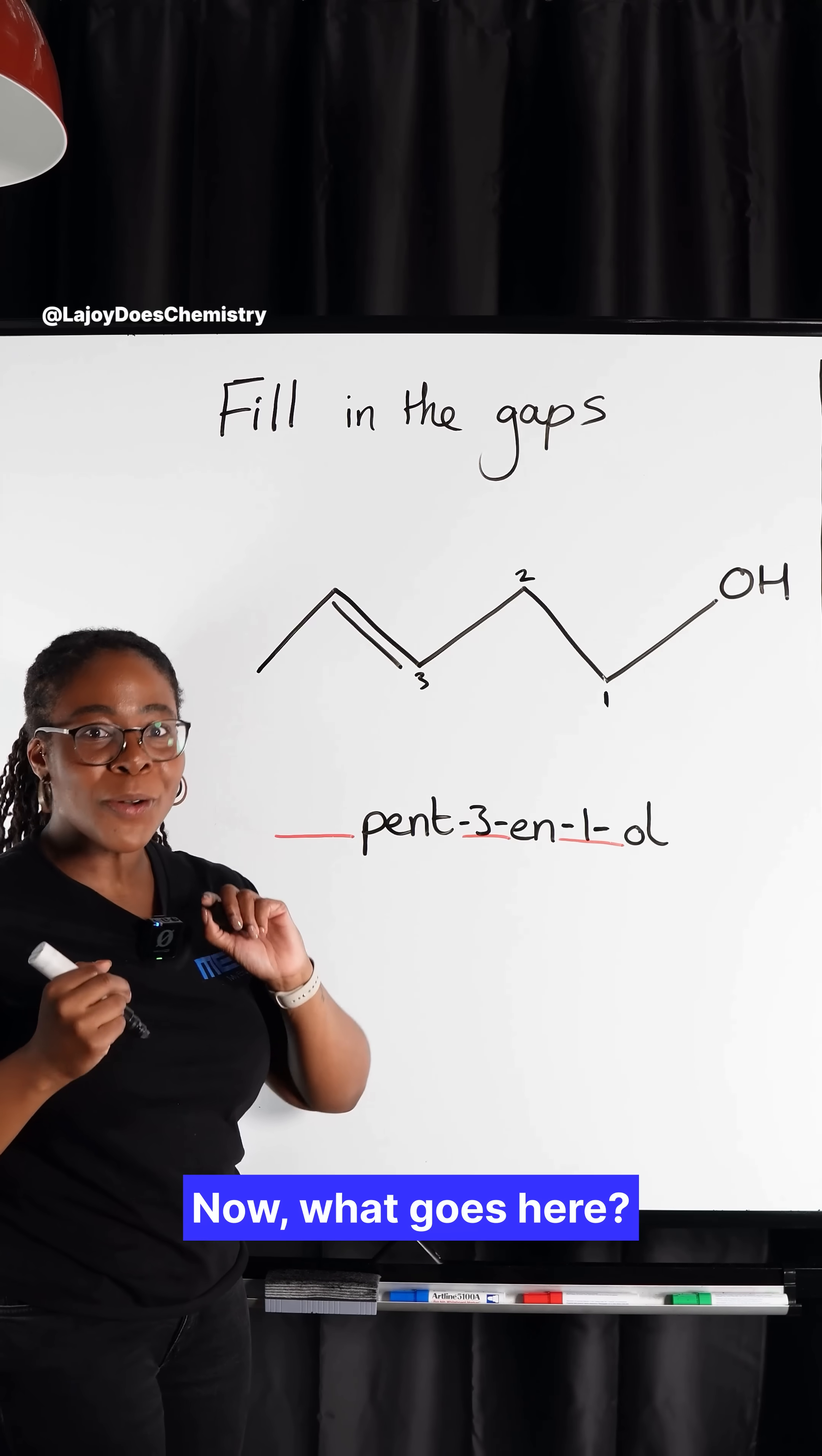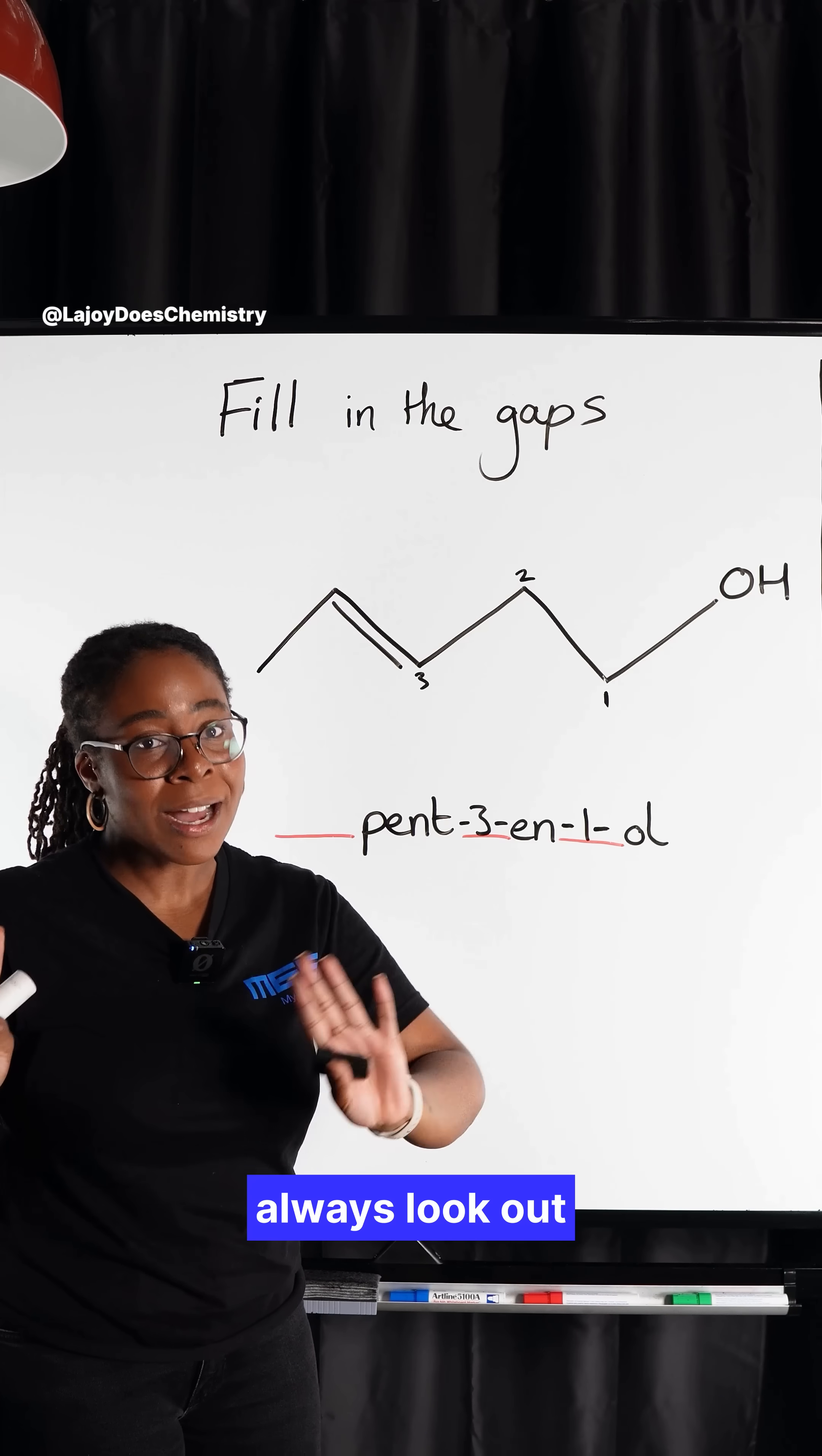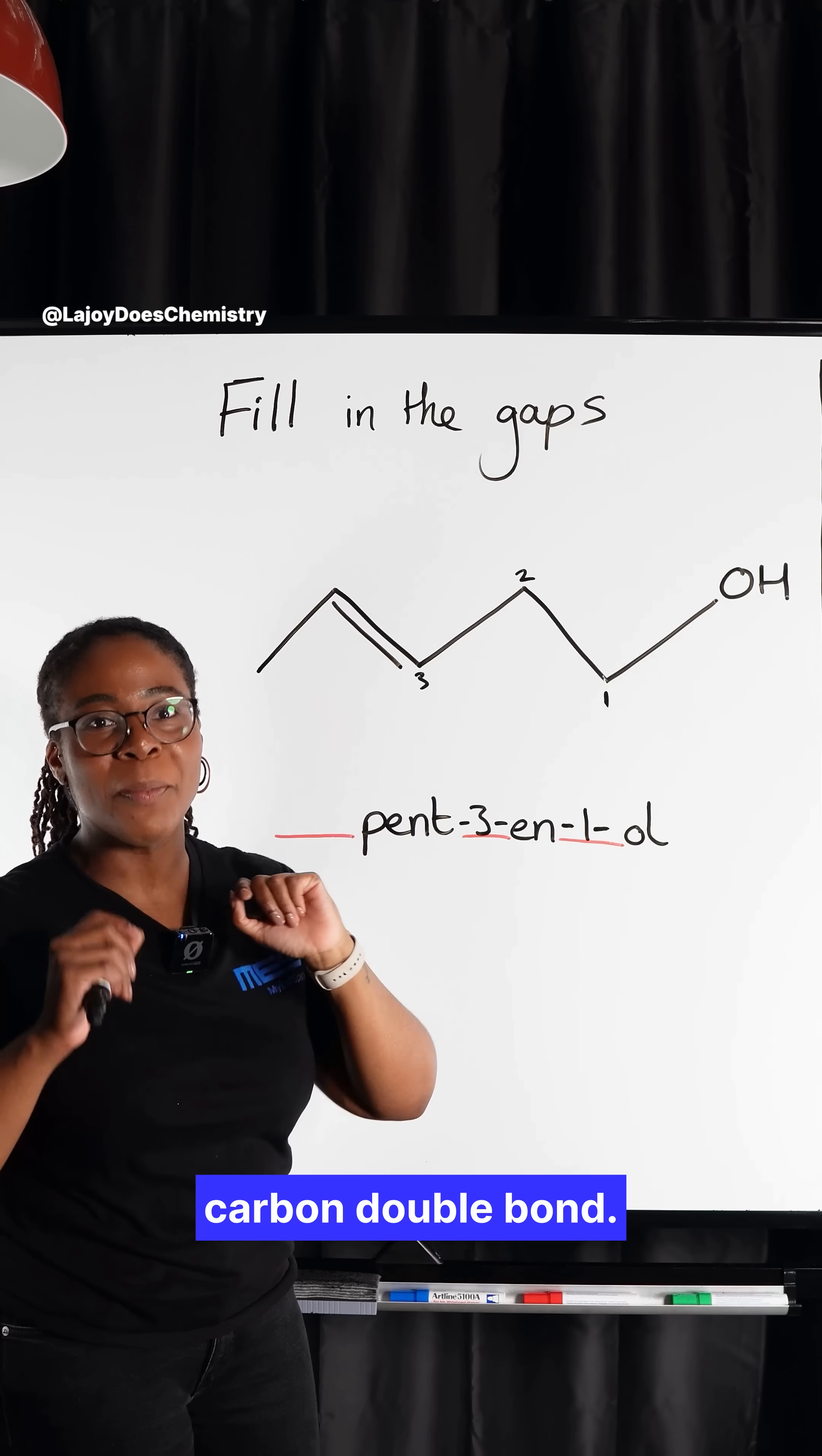Now what goes here, whenever we're looking at alkenes, we should always look out to see if we've got E-Z isomerism. And that's where we've got two different groups on the carbons in that carbon-carbon double bond.